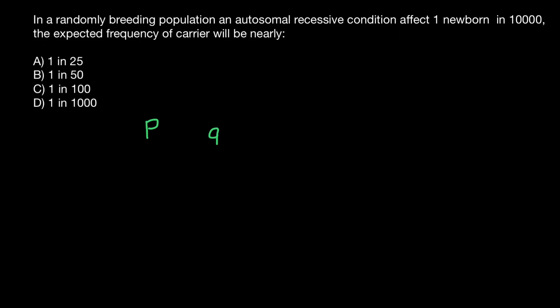In order to find all the possible combinations of these two alleles, let's just build a simple Punnett square. So P and Q on one side, P and Q on the other side, and here is our Punnett square.